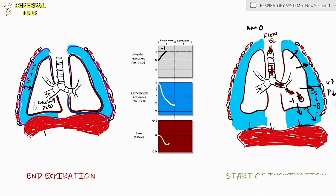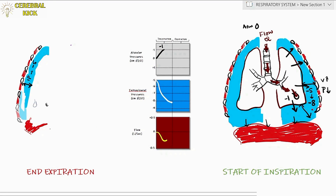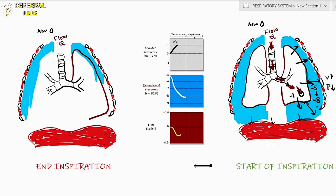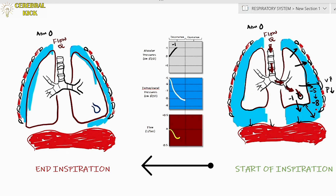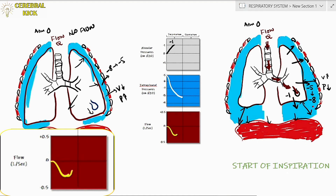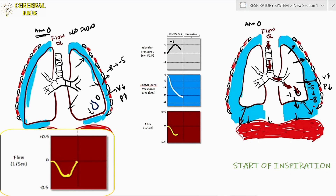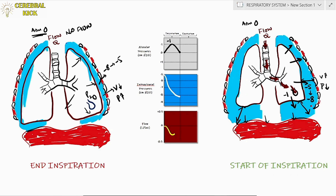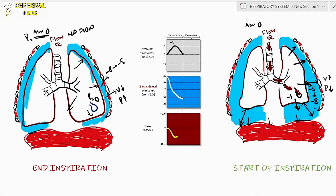As inspiration proceeds, air flows into the lungs and lung volume increases. The increasing volume of air raises alveolar pressure back toward zero. Once alveolar pressure again equals atmospheric pressure, the pressure gradient is zero and flow ceases — this is the end point of inspiration. These changes are also tracked on the pressure-volume graphs.